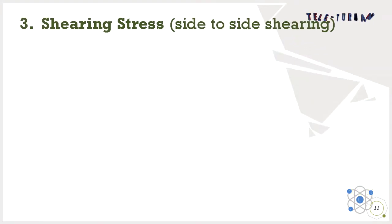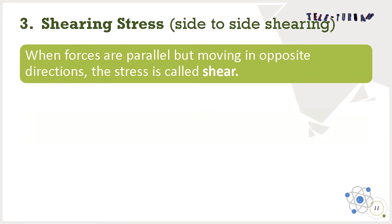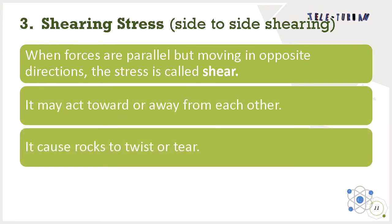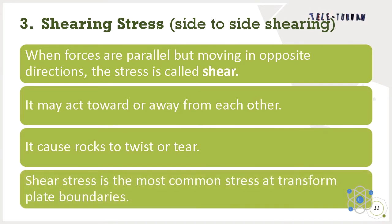And lastly, we have shearing stress, or side-to-side shearing. When the forces are parallel but moving in opposite directions, the stress is called shear. It may act toward or away from each other. It causes rocks to twist or tear. Shear stress is the most common stress at transform plate boundaries.